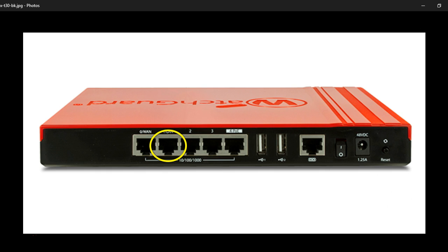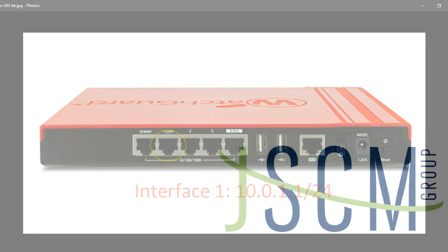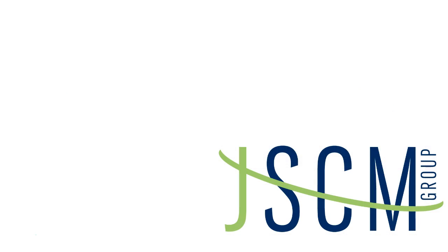This interface is set as the trusted internal interface. It is configured as a 10.0.1 subnet and should hand out a DHCP address to your computer. We're going to pause here for now. In the next video, we'll walk you through the new device configuration wizard, in which we'll be inputting some of our initial firewall configuration information.